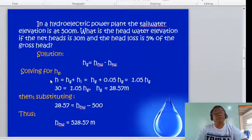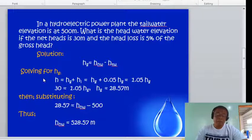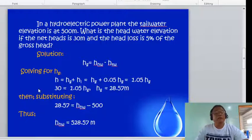Substituting the gross head of 28.57 meters: the gross head equals head water minus 500 tail water elevation. Getting the head water elevation, that equals 528.57 meters.